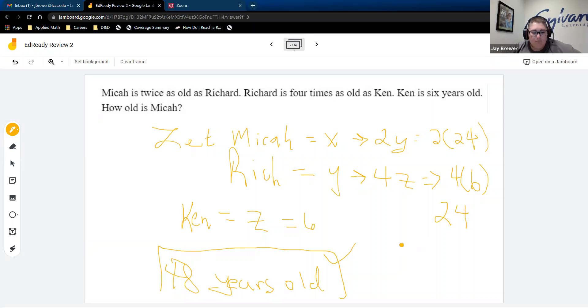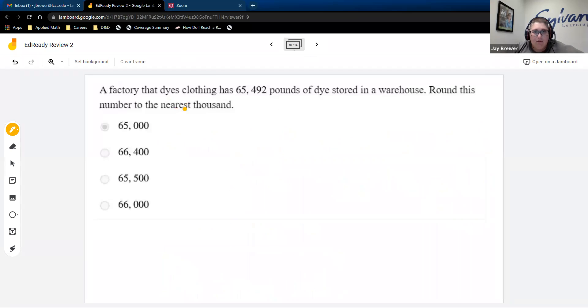And what we really care about is how old Micah is. Well, Micah is 2 times 24. So then Micah would have to be 48 years old. Okay. Definitely, if you had an issue with this problem, you want to review this concept either in Canvas or in EdReady, or you can rewatch this review. But you want to definitely get this kind of algebraic logical reasoning thought processes down.